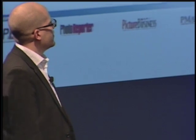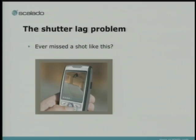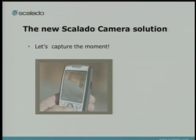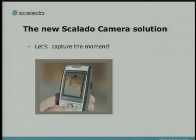Ever missed a moment like this? You're trying to capture the guy jumping — what happens? He's off the ring. This is a very common problem on camera phones: the shutter lag issue. What you want to do is capture the moment when the guy is actually flying in the air.